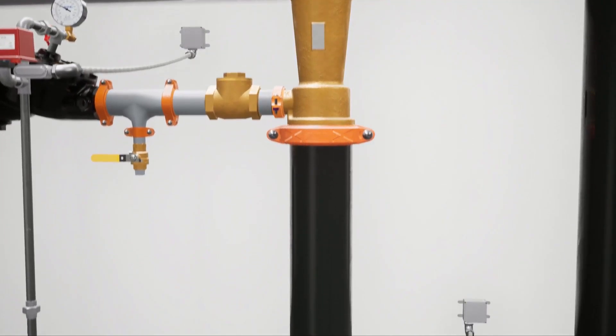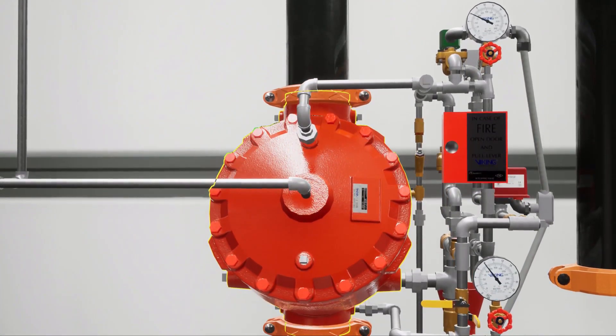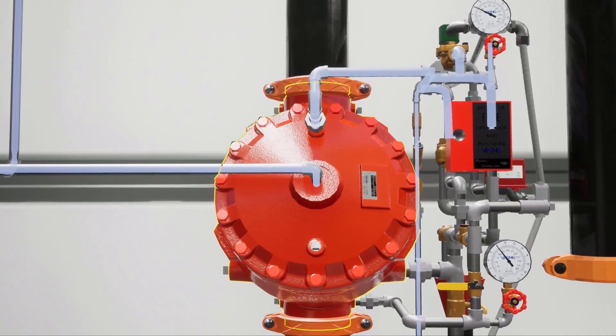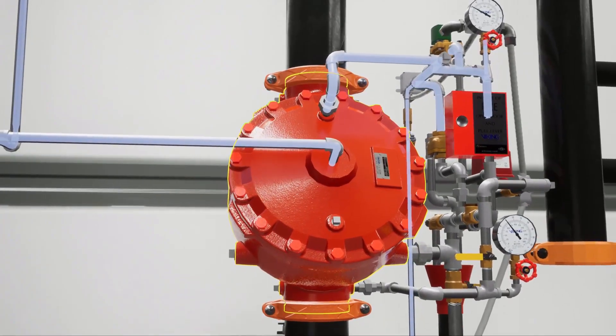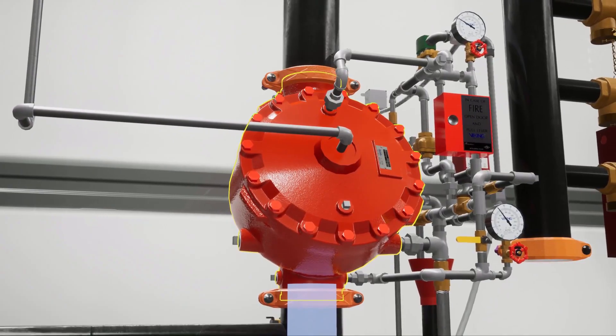Upstream from the ratio control valve is the F1 deluge valve, which has a shared priming connection with the concentrate control valve. This allows the two valves to activate simultaneously. The deluge valve is holding back the main water supply until the system is activated.